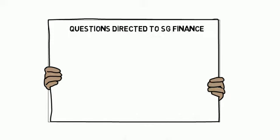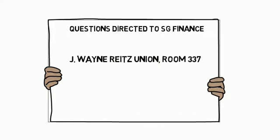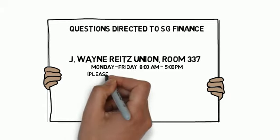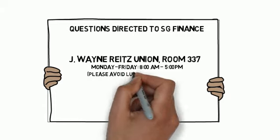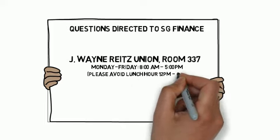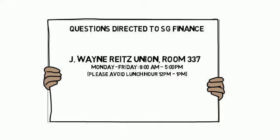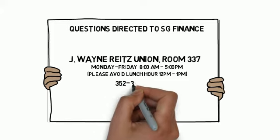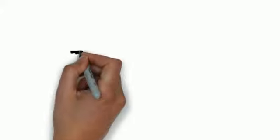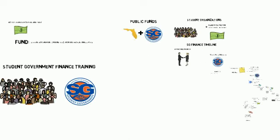If you have any questions, please do not hesitate to contact Student Government Finance. J. Wayne Reitz Union, room 337, Monday through Friday, 8 a.m. to 5 p.m. Please avoid lunch hours from 12 p.m. to 1 p.m. The phone number is 352-392-1623. Thank you for watching.